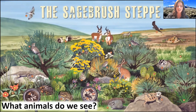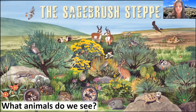I see a snake, good. Got rabbits, pronghorn, sage grouse, awesome. Frogs, lizards — someone even spotted the coyote way back there. Harrier, badger, fox.